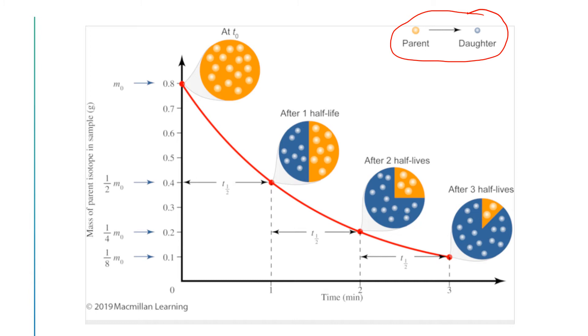After another half-life has elapsed, half of the remaining parent nuclei have been converted to daughter nuclei. And then after yet another half-life has gone by, that amount has been reduced by half one more time.